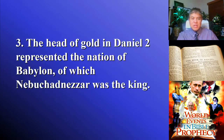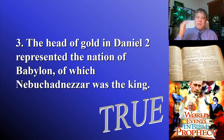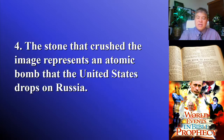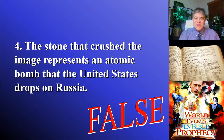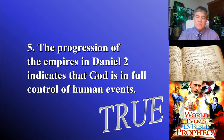Question three is true. The head of gold in Daniel 2 represented the nation of Babylon, of which Nebuchadnezzar was the king. Each metal in that Daniel chapter 2 image represented a kingdom that would rise and fall. Question four is false — that was just thrown in to see if it would throw you off. Question five is true: God is in control of the fall and rise of empires.